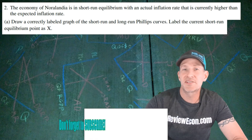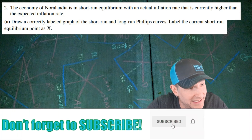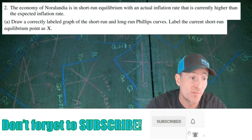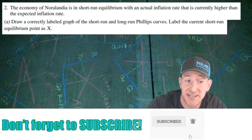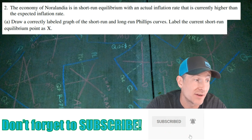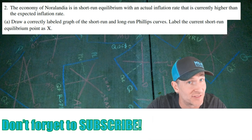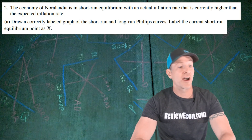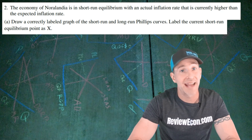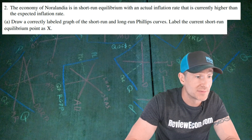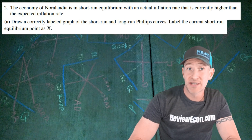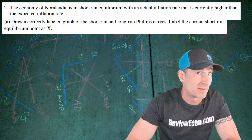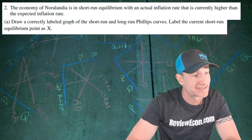This question starts with the country of Noralandia. We are in short-run equilibrium where the actual inflation rate is higher than the expected inflation rate. We're going to start off by drawing a long-run and short-run Phillips curve, and we're going to label the current short-run equilibrium as point X.